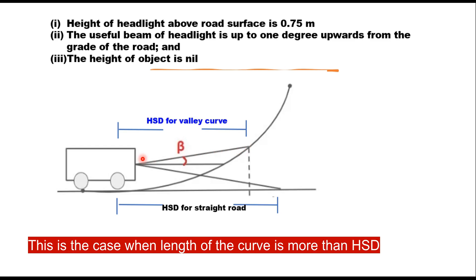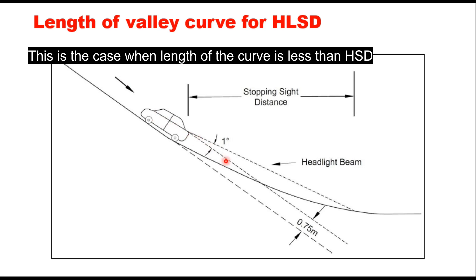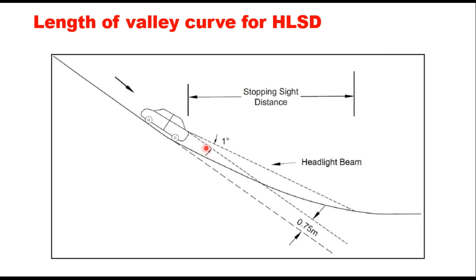The height of the object is taken as 0, that is the road surface. When the vehicle is coming down, the headlight is in a straight direction at a height of 0.75 meter — that is the headlight sight distance for a tangent or straight road. But if you take the headlight at 1 degree above the horizontal, then this is the headlight beam on a sag or valley curve, and this stopping sight distance is the headlight sight distance.